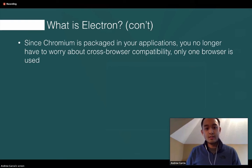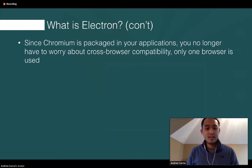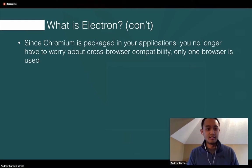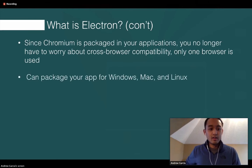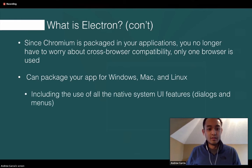Since Chromium is packaged in all of your applications, you no longer have to worry about cross-browser compatibility. From personal experience, developing in Chrome with the latest frameworks like Flexbox and then coming across Internet Explorer can blow up your application. But with Electron, Chromium is the only web browser you have to make sure your tests work for. You can also package your application for Windows, Mac, and Linux with literally one line of code — including 32-bit and 64-bit for each OS. Also included is the use of all native UI features, dialogues, and menus.